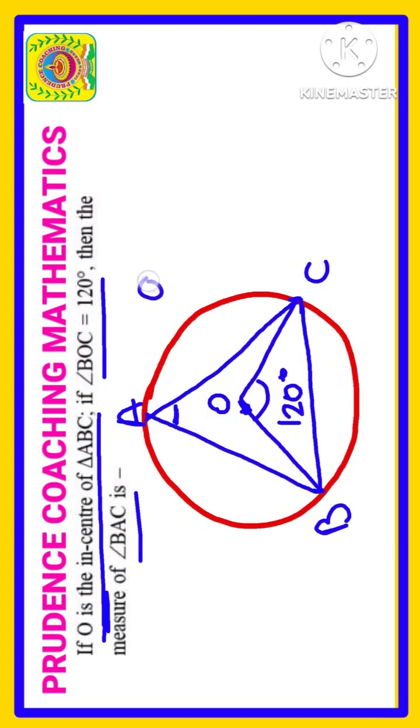We know that if we write 90 degrees plus half of this particular angle, that is angle A, we will get this incenter angle, which is equal to 120 degrees as given. So you need to find this A.